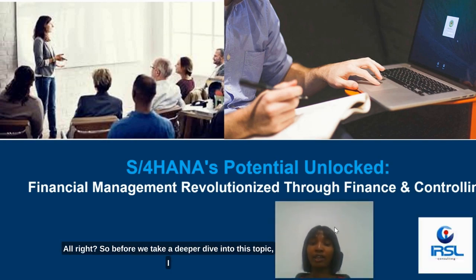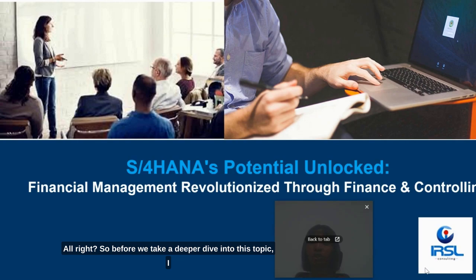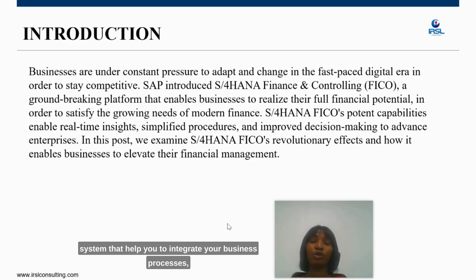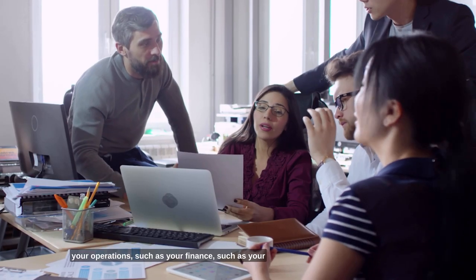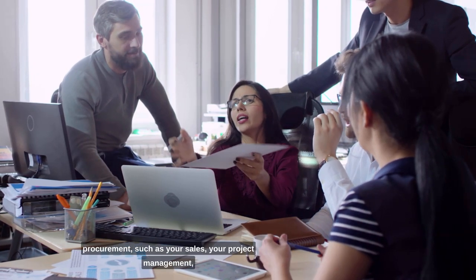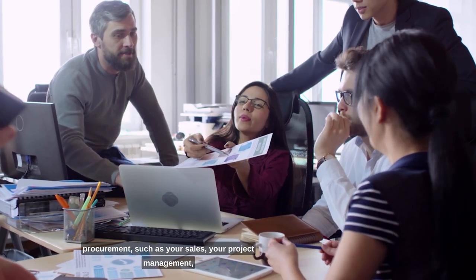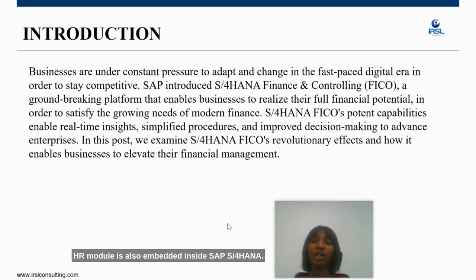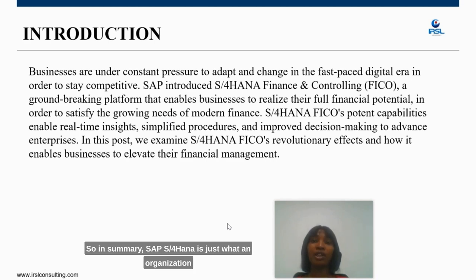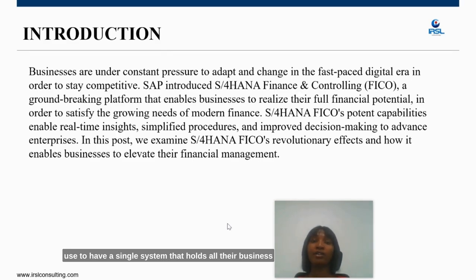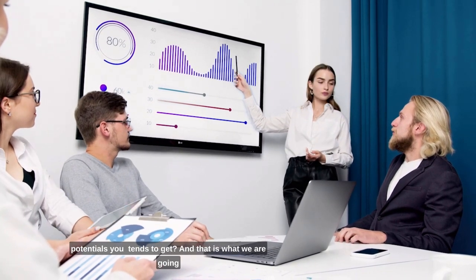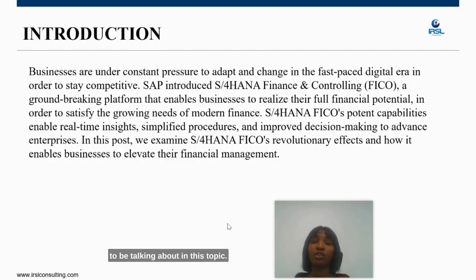Before we take a deeper dive into this topic, I want to introduce the topic to you — what SAP S/4HANA Finance and Controlling is. If you want to integrate your business processes and operations such as finance, procurement, sales, project management, and even HR, SAP S/4HANA has it all covered. In summary, SAP S/4HANA is what an organization uses to have a single system that holds all their business processes together.